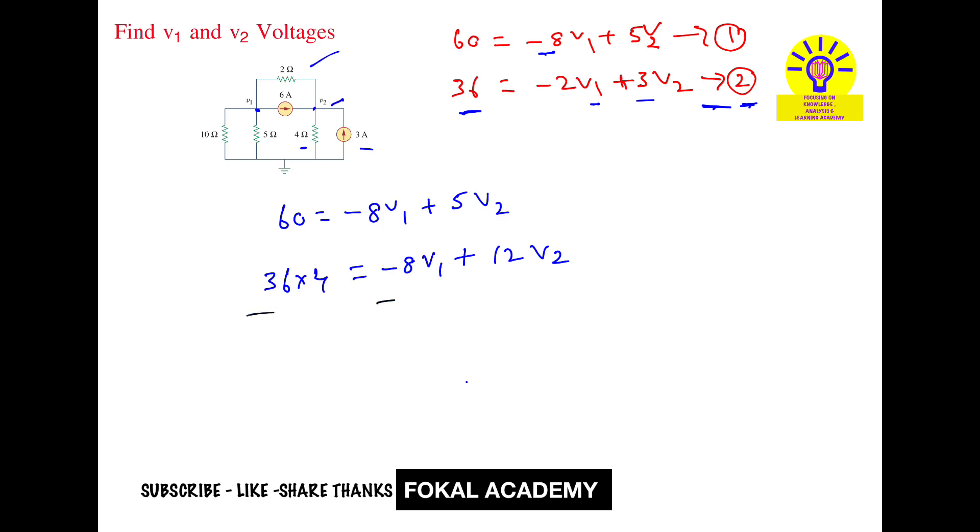Subtracting the equations: 60 minus 144 equals minus 7v2. Minus 84 equals minus 7v2. Dividing, v2 equals 12 volts.